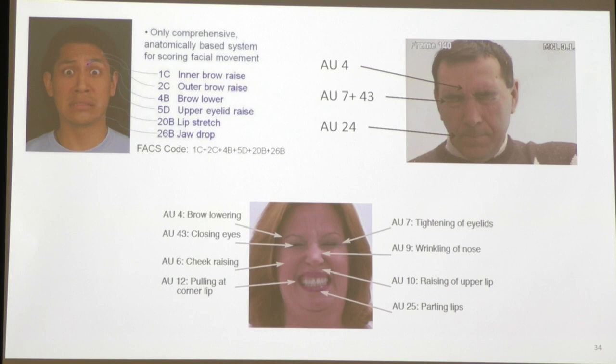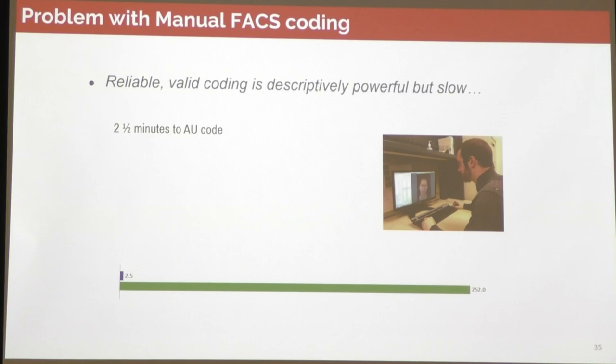There's a big problem with manual FACS coding — it's really reliable and valid, but if you have a two-and-a-half minute video, you will need more than four hours of coding time. One of our expert coders sits in front of a video and goes through it frame by frame annotating every action. We really need an automated system.